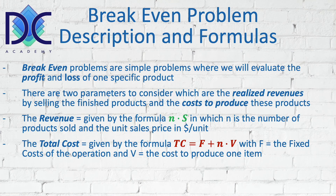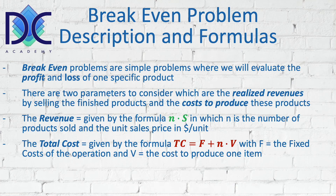An additional parameter is the total cost. The total cost is typically the sum of the variable cost and the fixed cost: TC = F + nV, where F is the fixed cost and V is the cost to produce one item. The fixed cost is what we pay even when we are not producing anything — like an office or a factory building. The variable part depends on the number of products we want to produce.